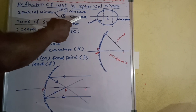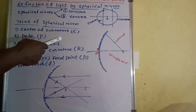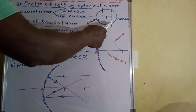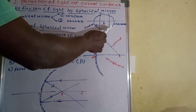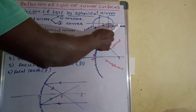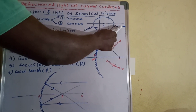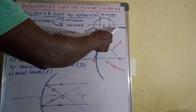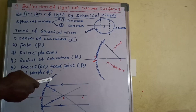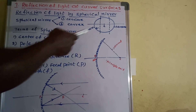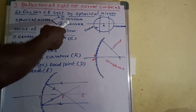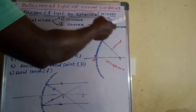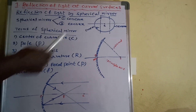The other type is the convex mirror. Here we cut the sphere from this point to this point and we get this portion. This is the reflected portion, and the reflected portion is in convex shape. A mirror in which reflection takes place at the convex part is called a convex mirror.